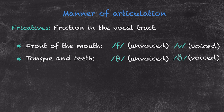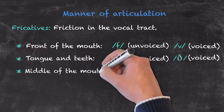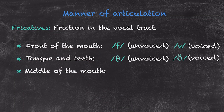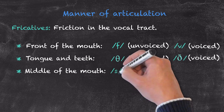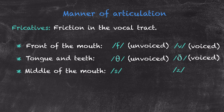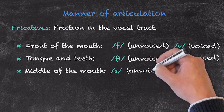Moving a bit further back in the mouth, we have our friction which comes from the middle of our mouth. We have four sounds in this area. Those two sounds, S and Z, are made in the same manner and in the same place. One is voiced and the other is not — first the unvoiced S, and the voiced Z.